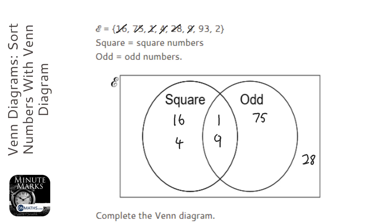93 is not a square number, but it is odd. And 2 is not a square number or odd, so that's going to go on the outside here.